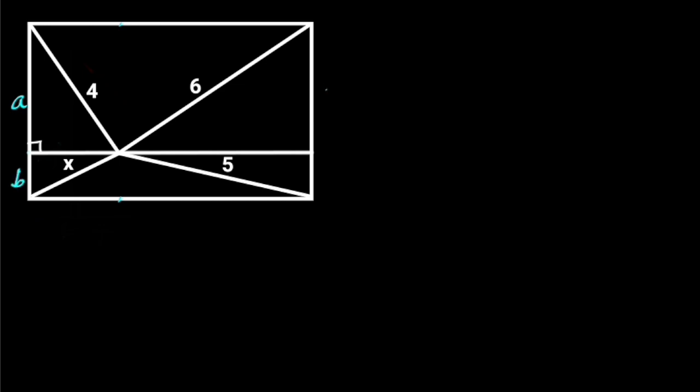To solve this problem, first let's split the rectangle into two by drawing a perpendicular line that passes through the point where the lines in the given rectangle intersect. Let's call the top side of the rectangle A and the bottom side B. Since the opposite sides of rectangles are equal, this side will also be A and this side B.